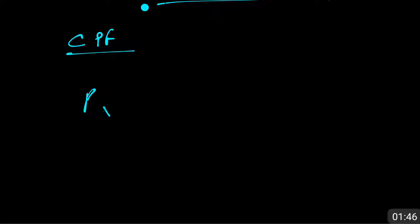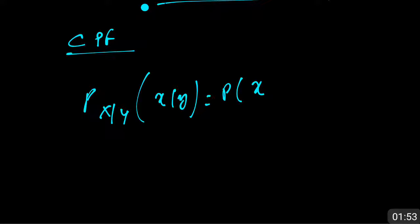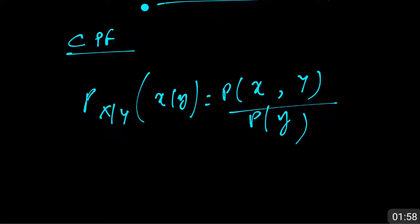Conditional probability is written as the conditional probability function: P(X | Y), meaning X given Y already happening, or Y given X already happening. This equals P(X, Y) divided by P(Y), provided P(Y) is not equal to zero.